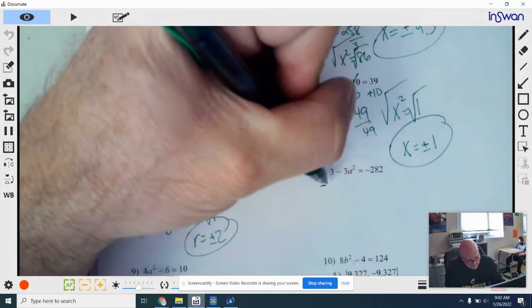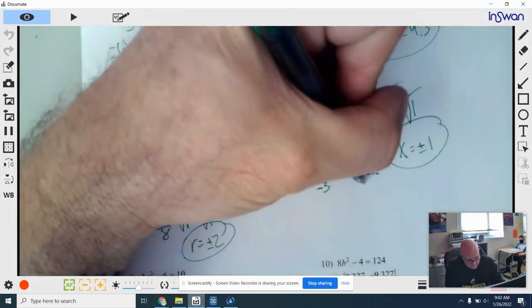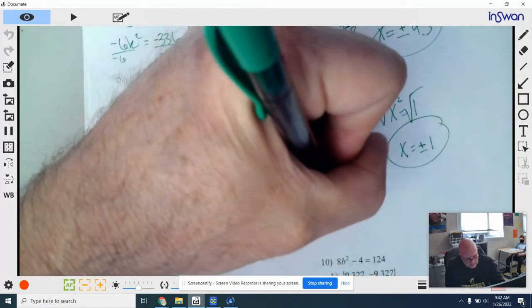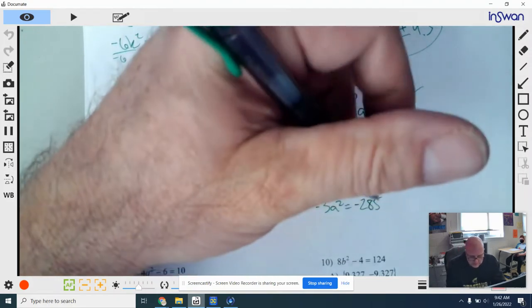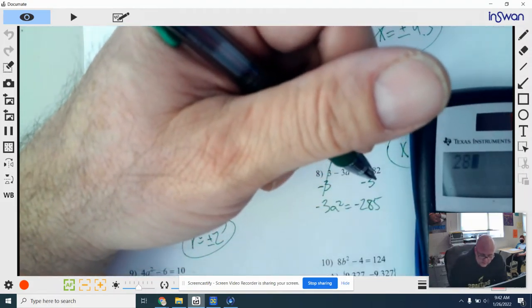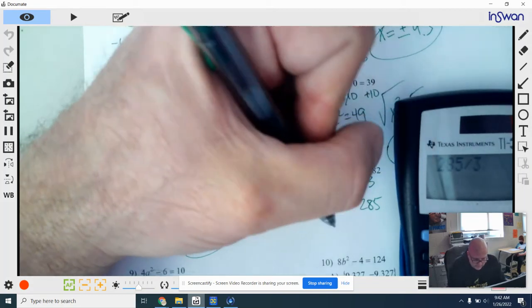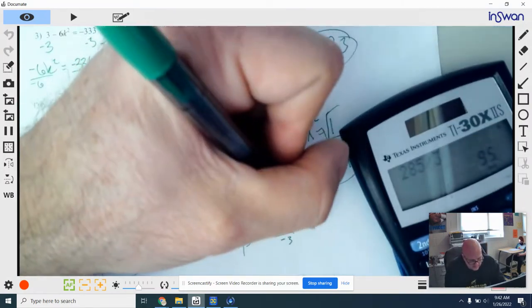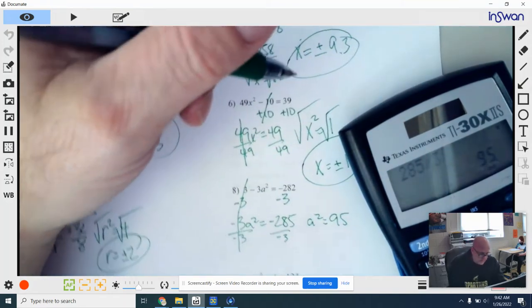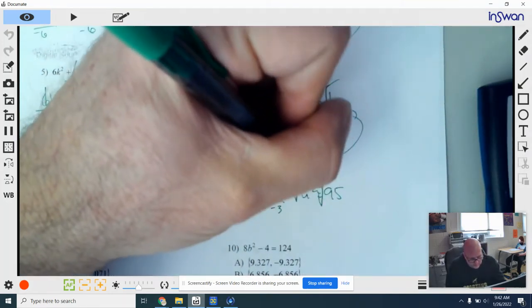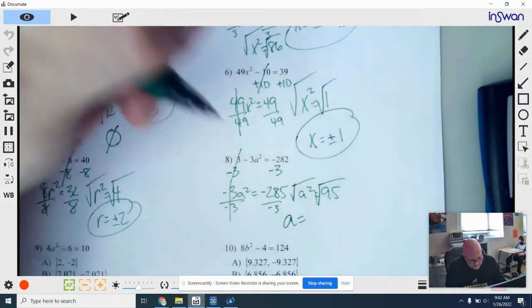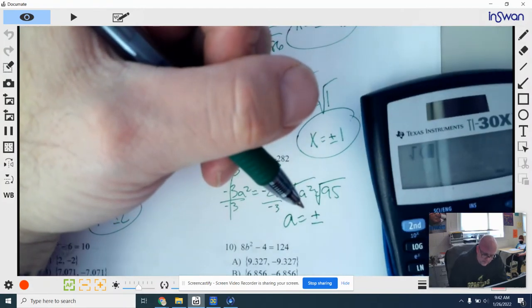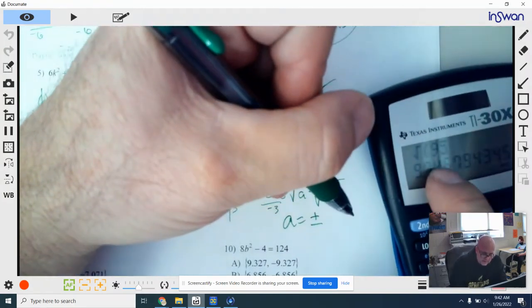And last one for today. Let's start off with subtract that 3. Come over here, subtract 3. So that cancels out. You have negative 3a squared equals negative 285. So I'm going to take 285, divide that by 3. My answer is going to be a positive because you got the two negatives. And I get a squared is equal to 95. This one is not a perfect square. So I'm going to do square root, left side, right side. You get a equals plus or minus. And the square root of 95 rounded off to the nearest tenth is about 9.7.